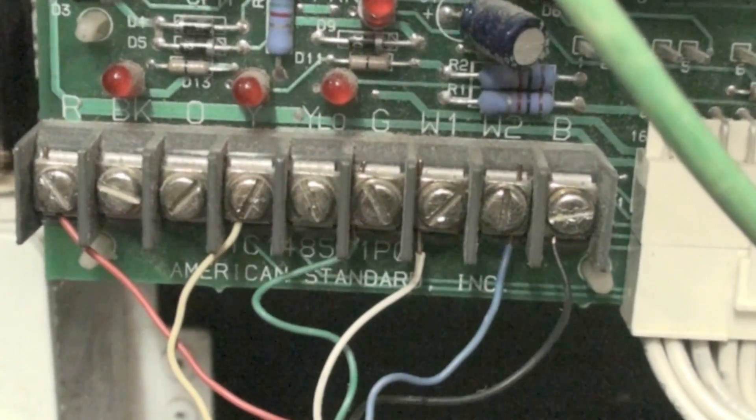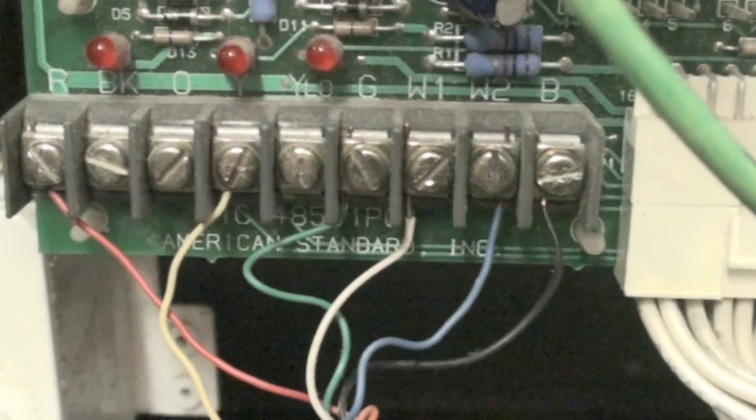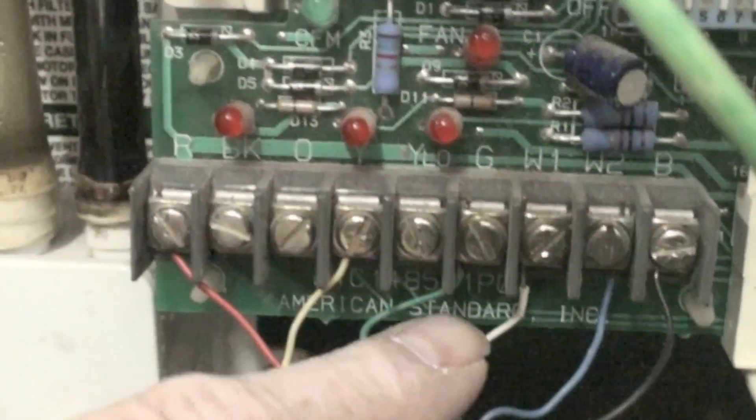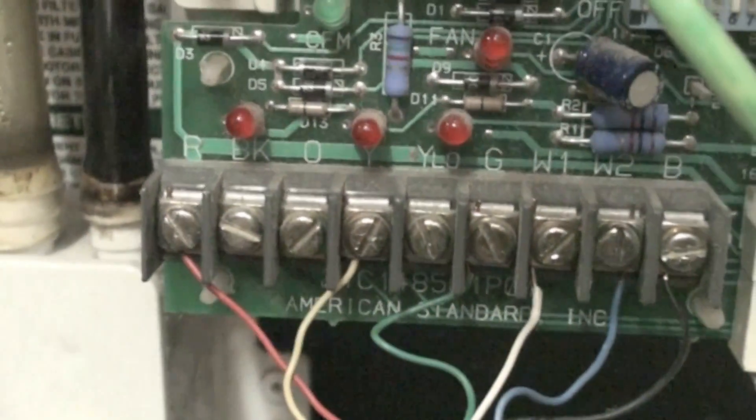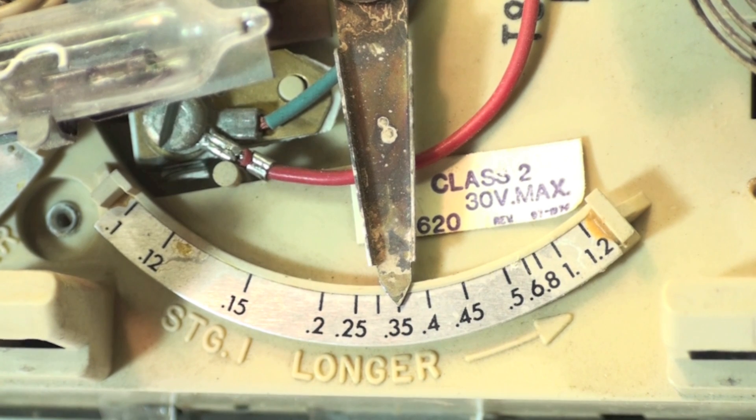Okay, some furnaces will have a terminal board like that. What you're looking for is W1. It'll probably be the white wire, this one right here. And you will clamp that wire. So it's pretty much the same as any other. It's just there's a terminal board.